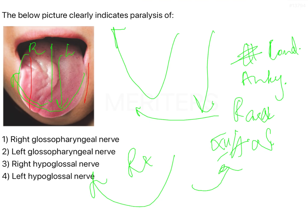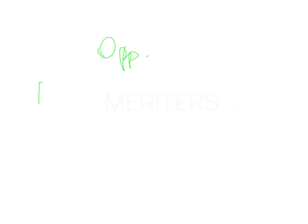Conversely, when you have paralysis of your vagus nerve, the entire uvula is pushed to the opposite side. For the vagus nerve, it is the opposite side. So, if my right vagus is paralyzed, that means the uvula will be pushed to the left side. Why? Because the right side muscles are not working; however, the left side muscles are working and they are pulling the entire uvula towards that side.